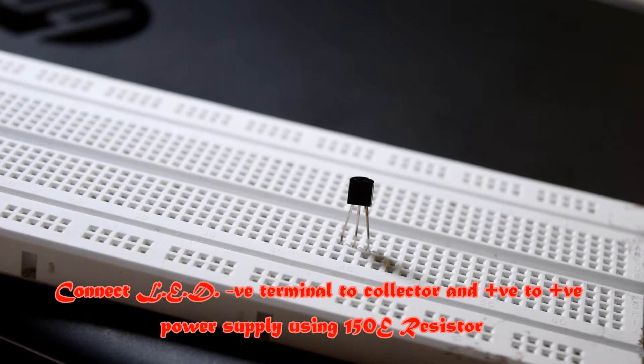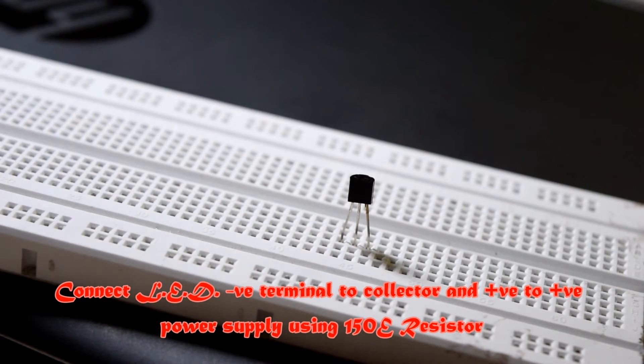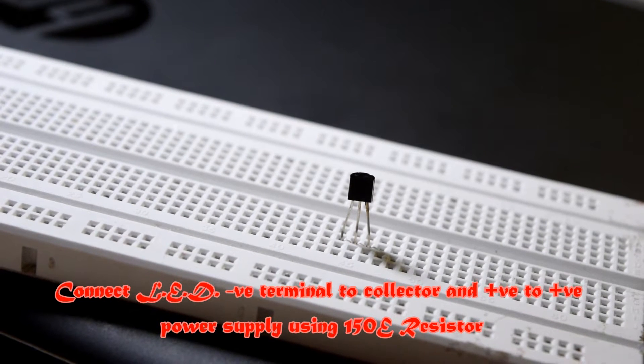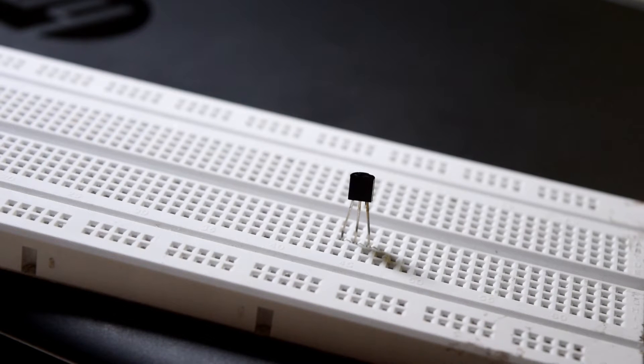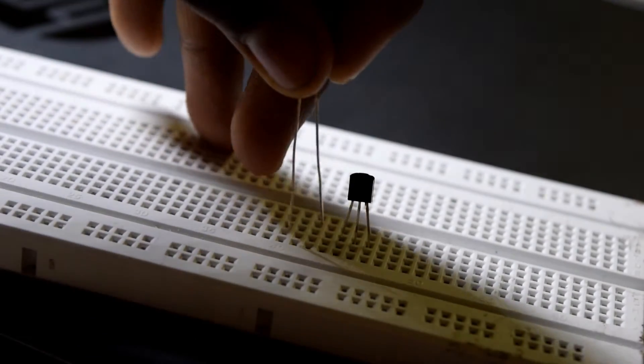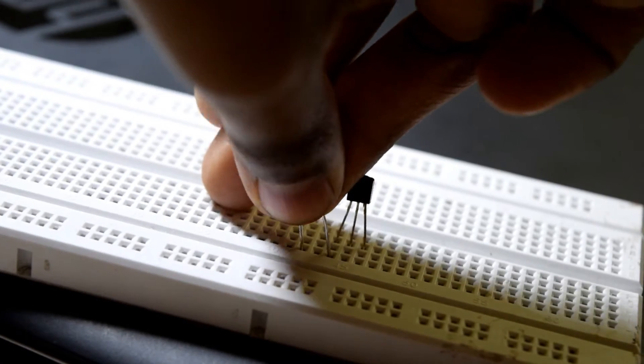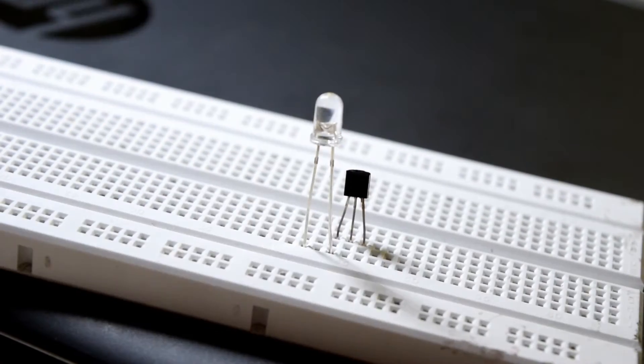Now we have to take our LED and connect its negative terminal to the collector of the transistor. Collector is the left pin, base is the middle pin and the emitter is the right pin. Negative terminal to the collector and positive to any other rail, like this.